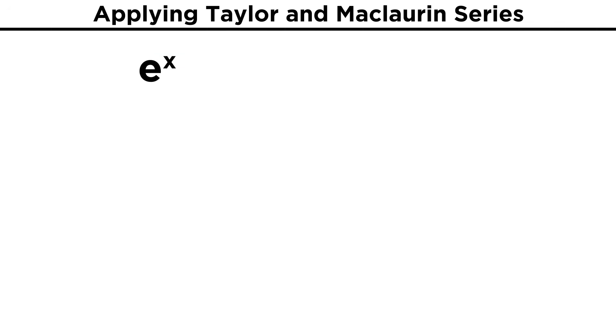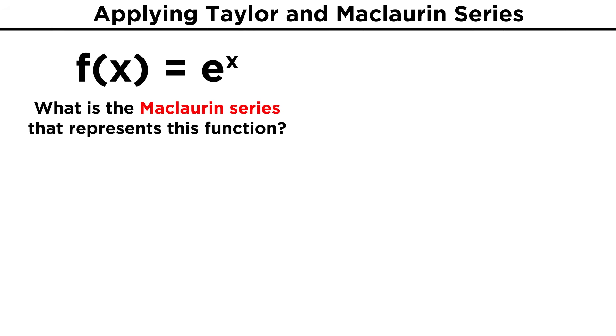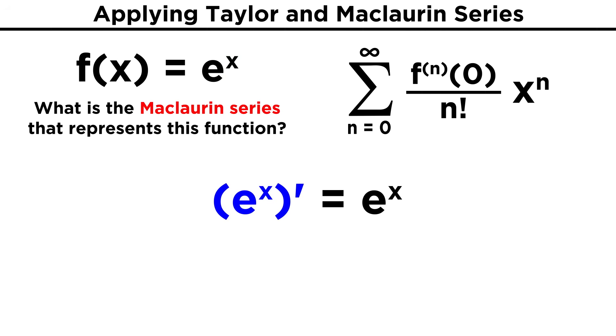Take for example e to the x. Let's find the Maclaurin series that represents the function f of x equals e to the x. That will be the nth derivative of e to the x evaluated at zero, over n factorial times x to the n. Well what do we know about e to the x? The derivative of e to the x is e to the x.